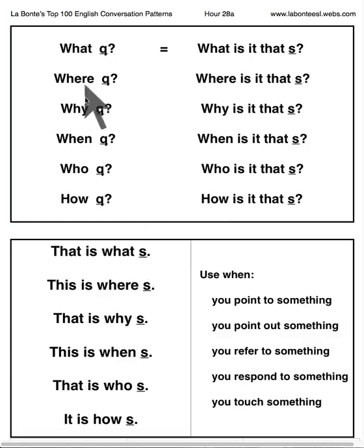This once again follows this format here of what, where, why, when, who and how. The universe seems to revolve around these six generalities. And as you see here, sometimes I switch that, this and it because this and the third person will change a bit. When are these used?